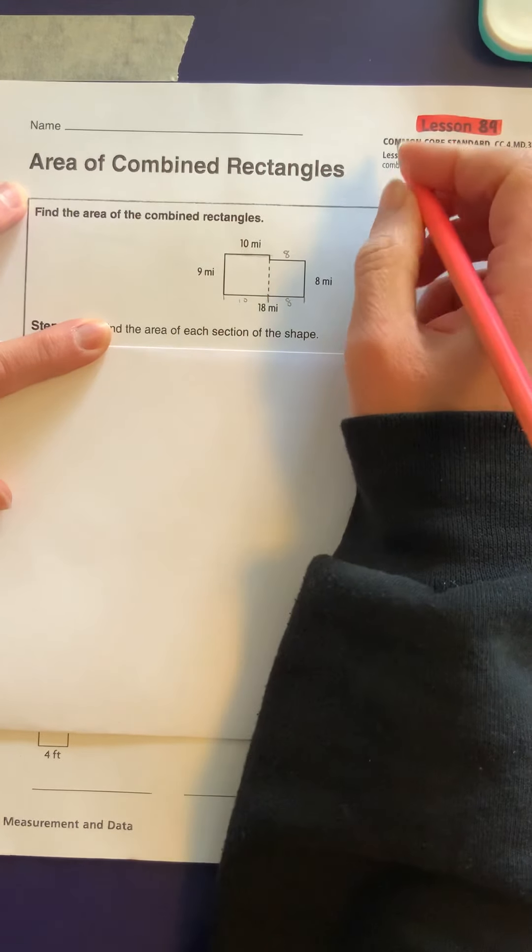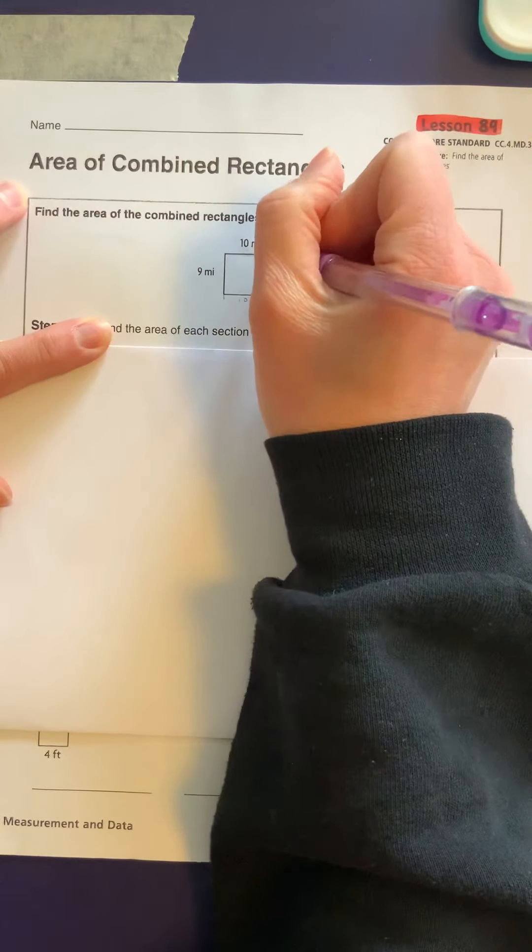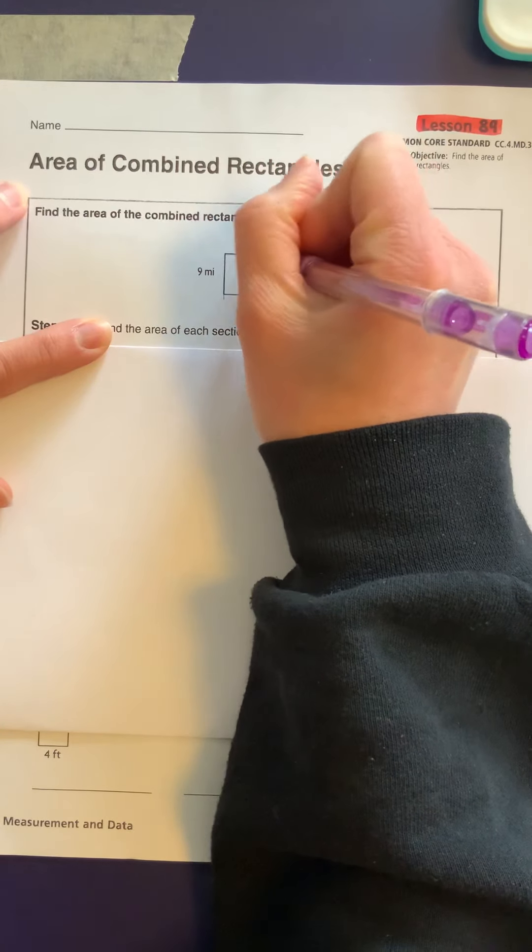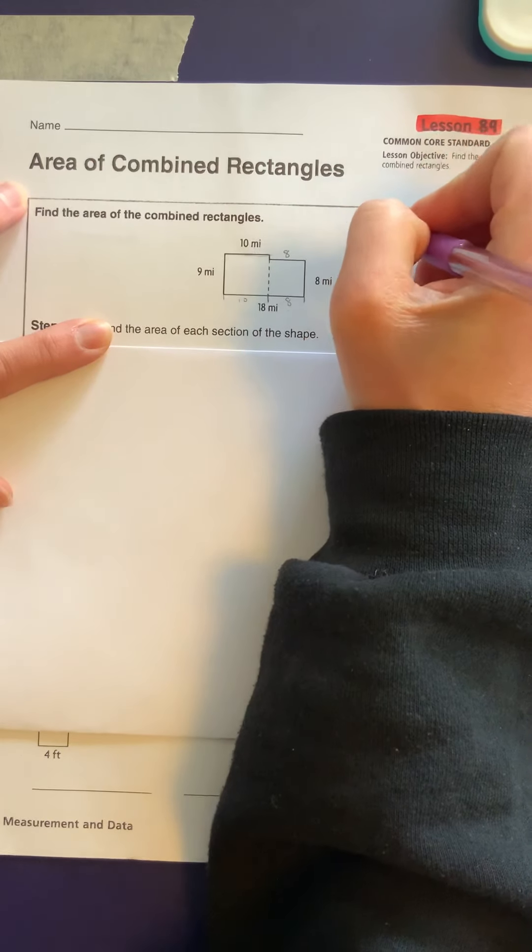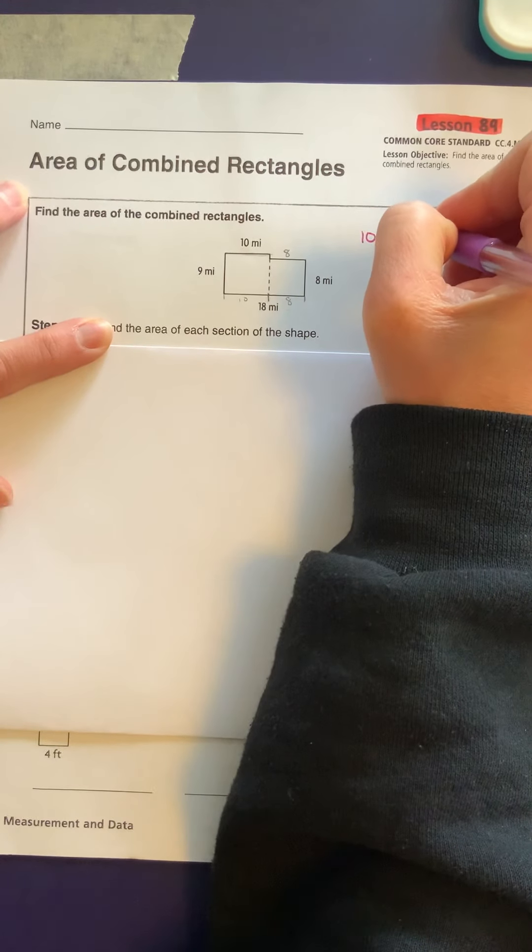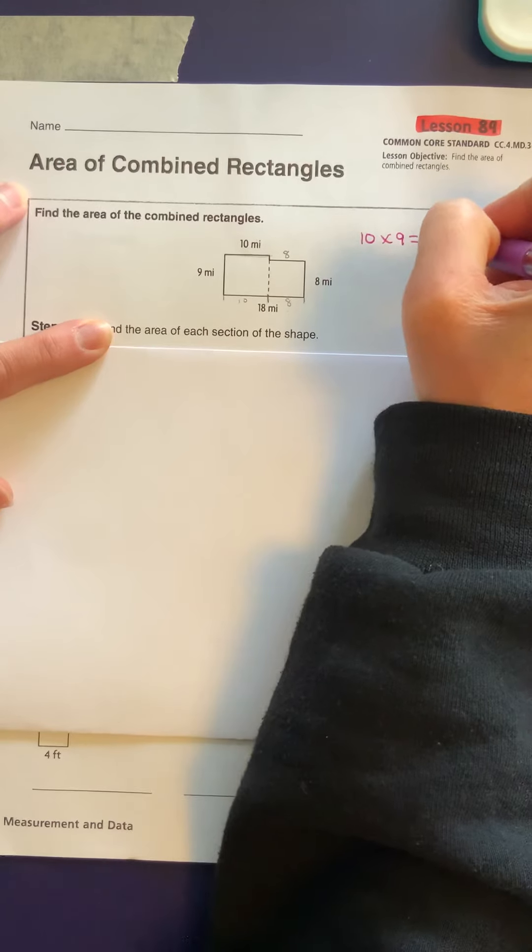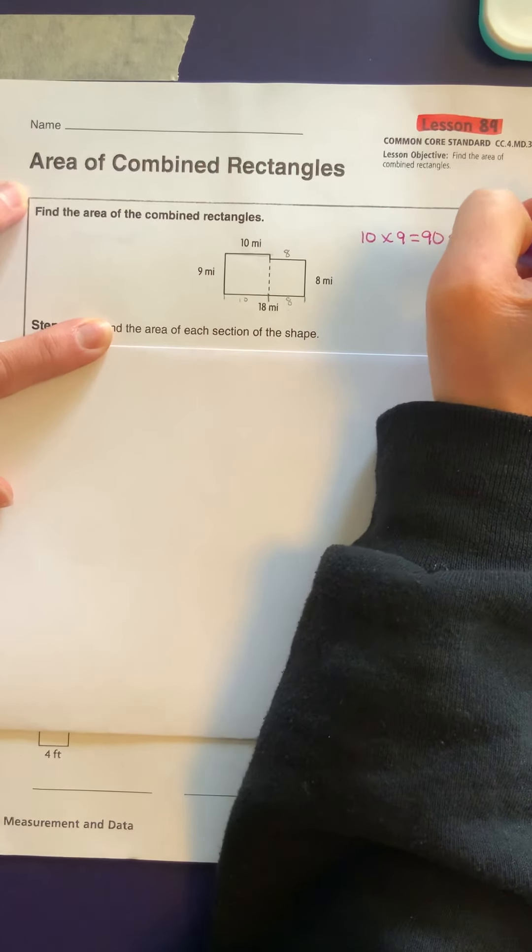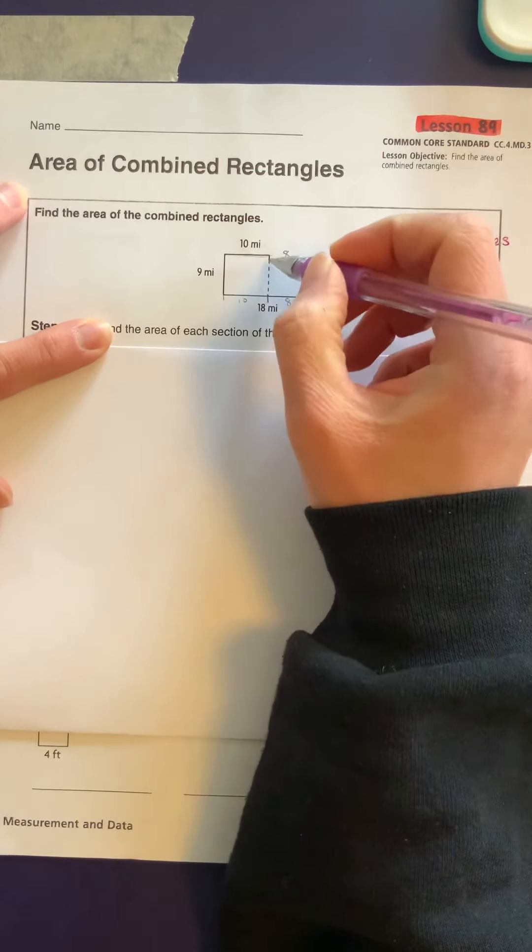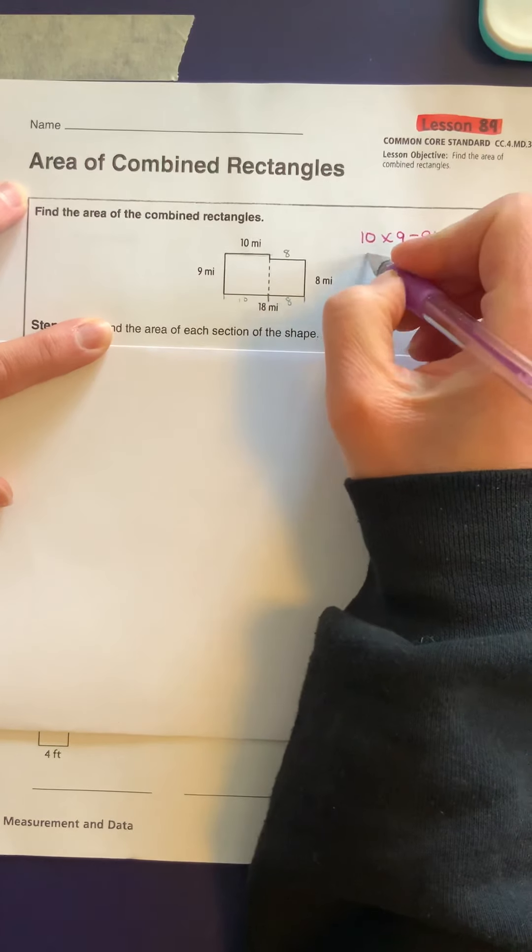So the first thing we do is we add up our first rectangle to find the area and we take the base times the height. So 10 times 9 is going to give us 90 square miles. That's what MI stands for.